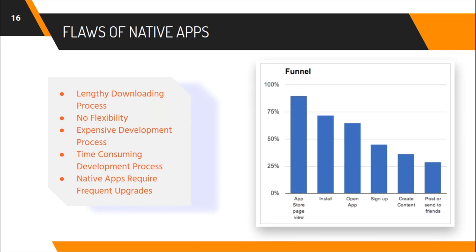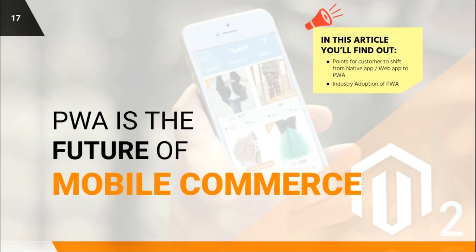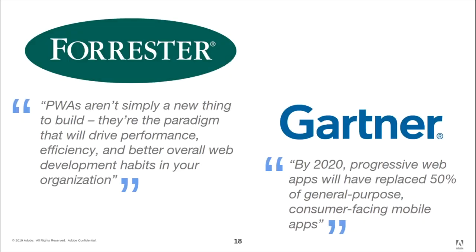Now let's see the flaws of native apps which PWA addresses. Native apps have a lengthy downloading and installation process. Native apps are platform-dependent, whereas PWA uses the same source code for both iOS and Android — no need to write separate code, which saves time and reduces cost. Native apps also need frequent updates, whereas with PWA you simply reload to get the latest features.